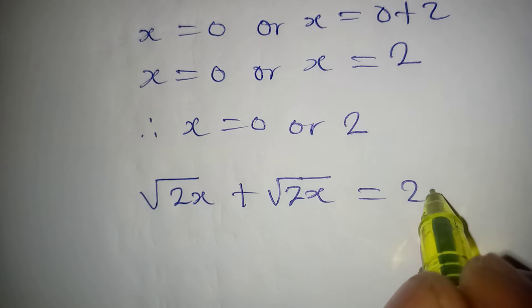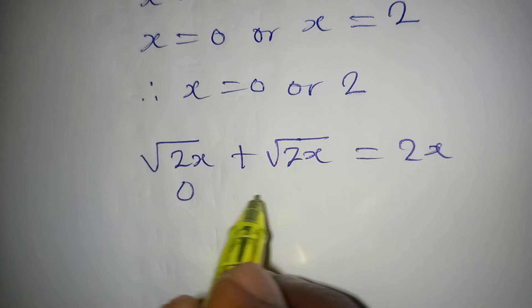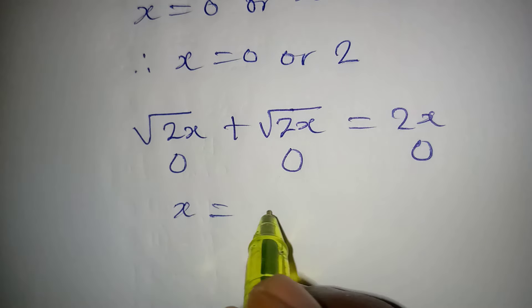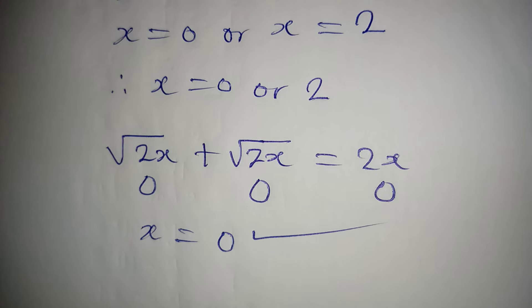If you put in zero here you'll be having zero here, zero here, zero here, meaning zero will equal zero. Zero satisfies.